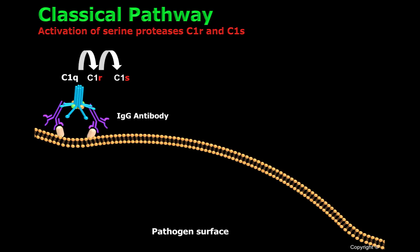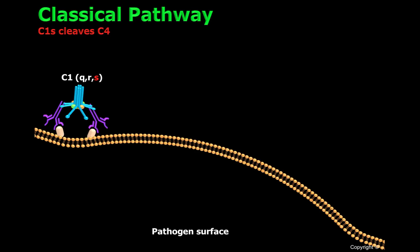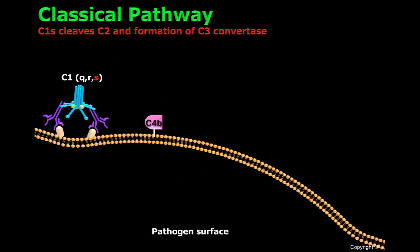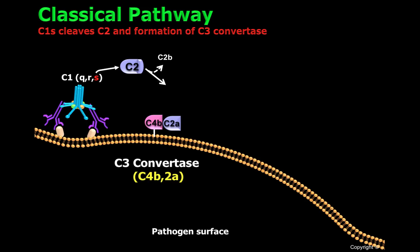Activated C1-S will be able to do an important function. C1-S will be able to cleave another component of the complement system called C4, generating C4-A and C4-B. When C4-B is close enough to the cell surface, it will bind covalently and attach to the surface of the pathogen. This is what we call C4-B deposition. C1-S is also able to cleave C2, generating C2-B and C2-A. If C2-A is close enough to a prebound C4-B on the cell surface, it will generate a complex called C3 convertase, or C4-B-C2-A.